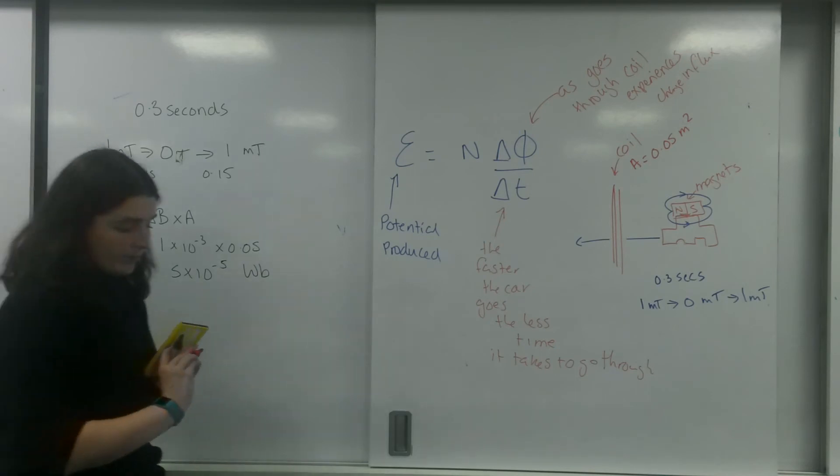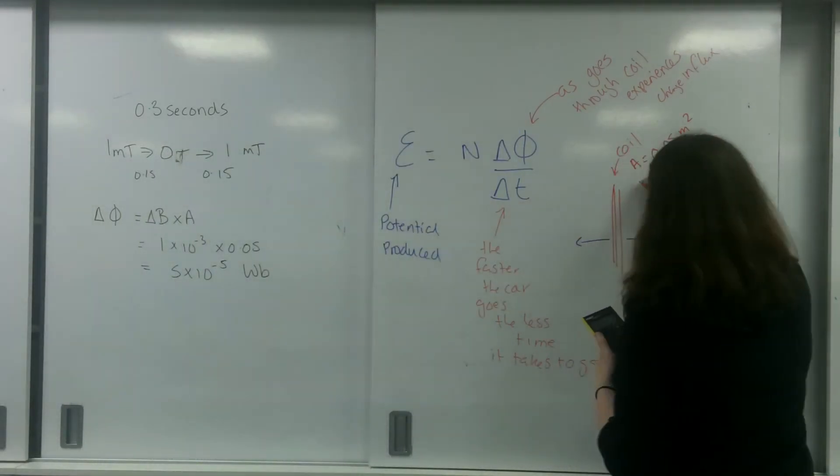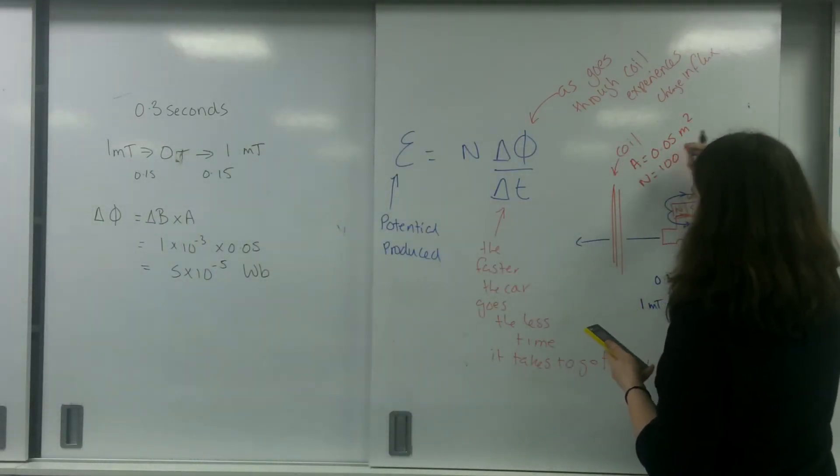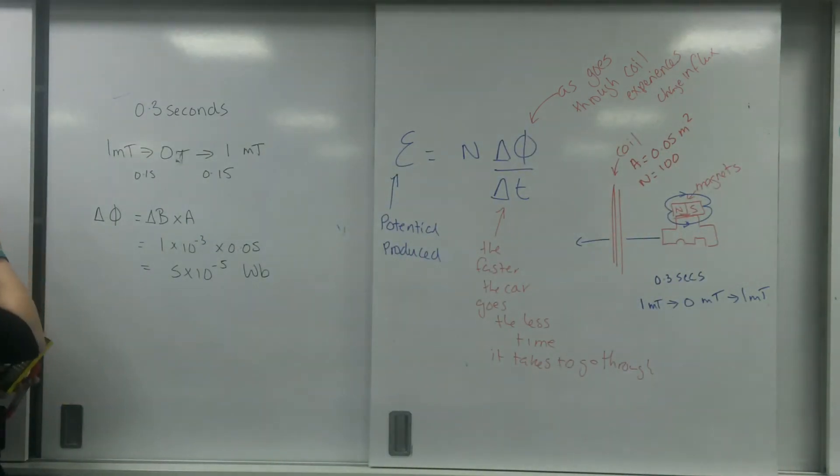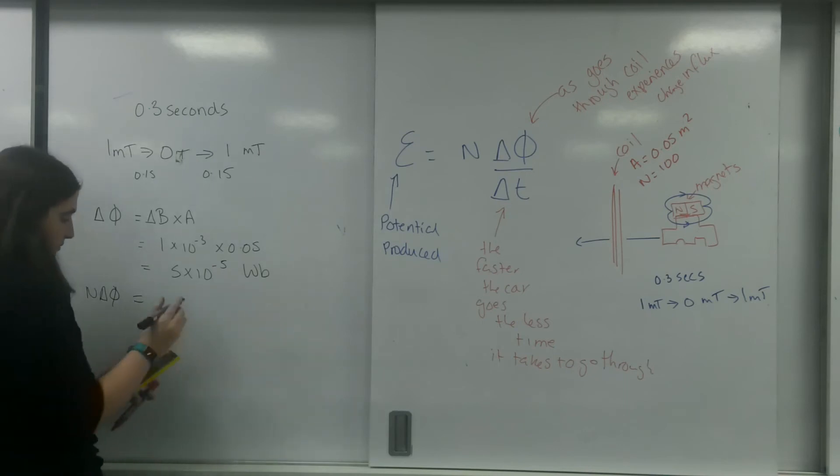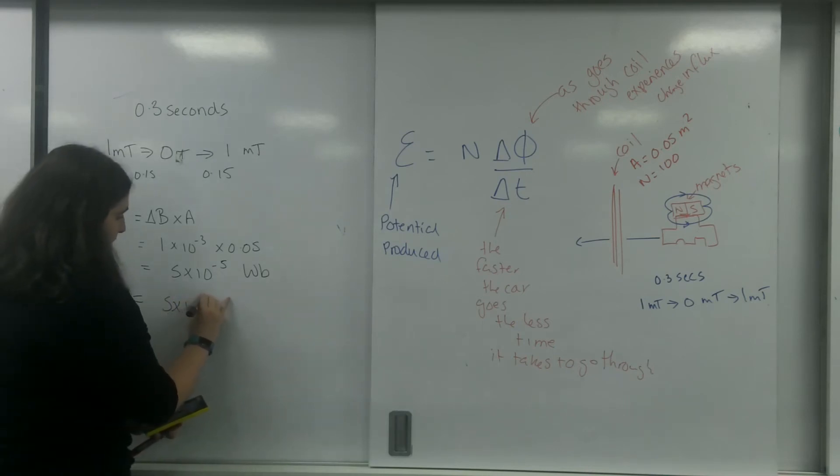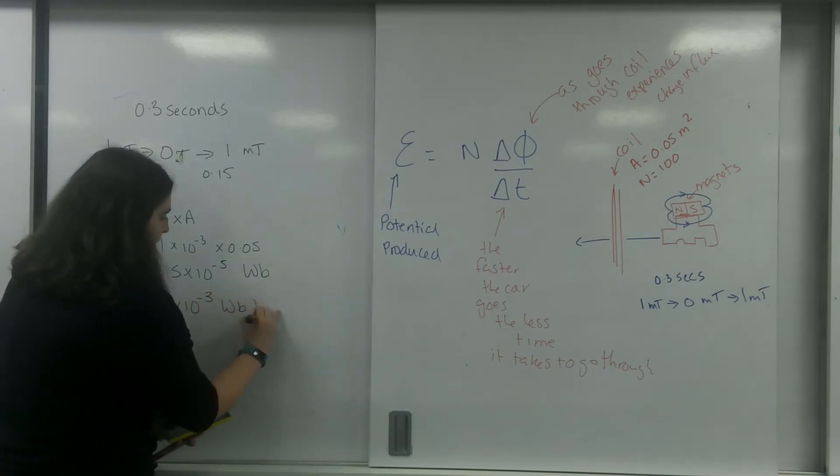Now let's say my coil has 100 turns to it. My change in flux linkage equals 5 times 10 to the minus 3 Weber turns.